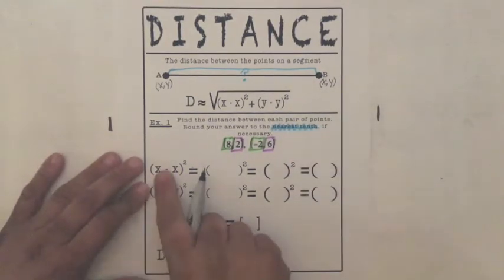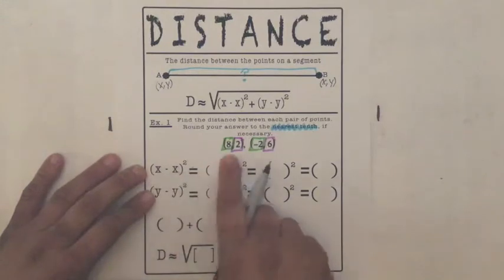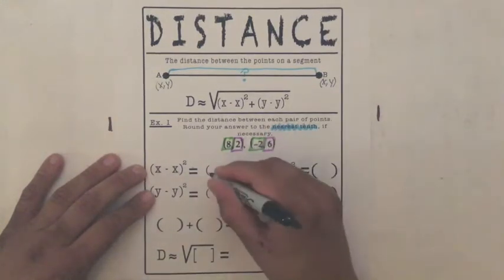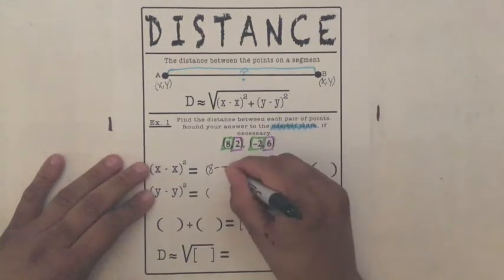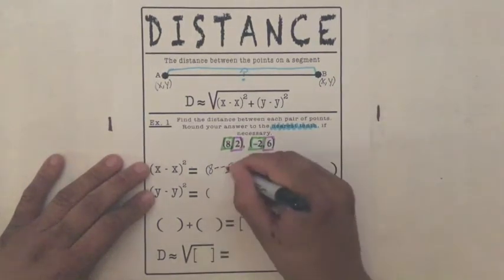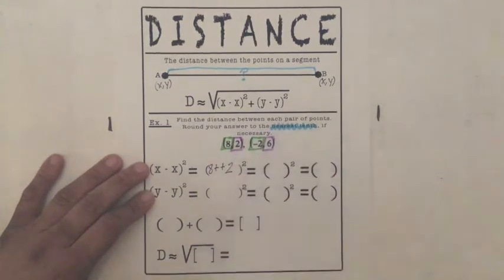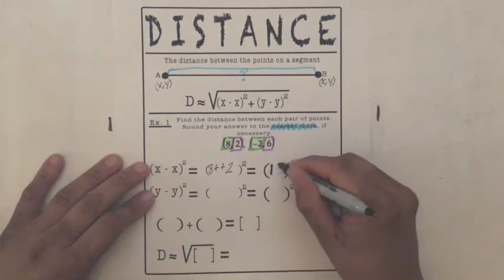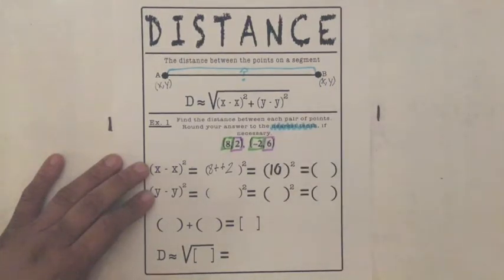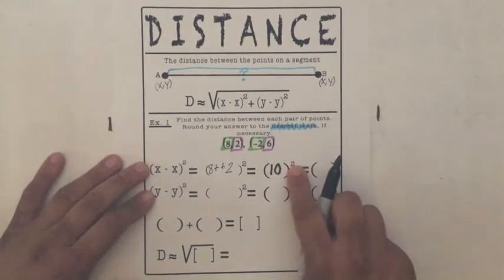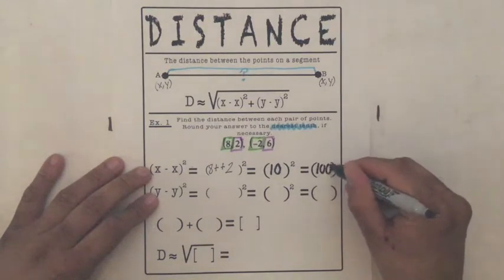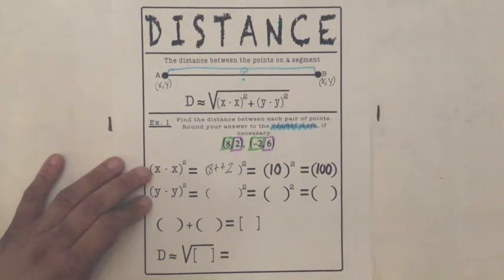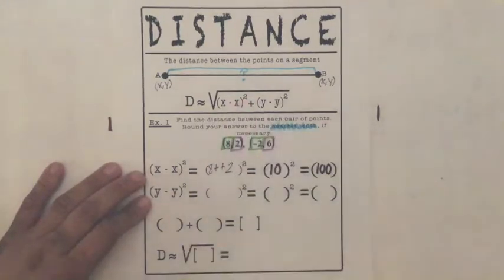So let's do it. First, it says X minus X. So green minus green. So we say eight minus negative two. A minus and a minus become plus. So eight plus two is 10. Ten squared, a squared means just multiply that number two times by itself. So 10 squared means 10 times 10, which is 100. So we got the X minus X squared part down.